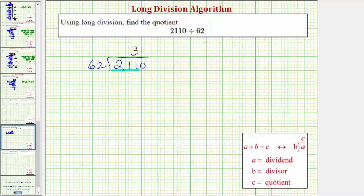Three times 2 is 6, and three times 6 is 18. Now we subtract. If this difference is less than 62, the 3 is correct. If the difference is greater than or equal to 62, the 3 is incorrect and we need to increase it.